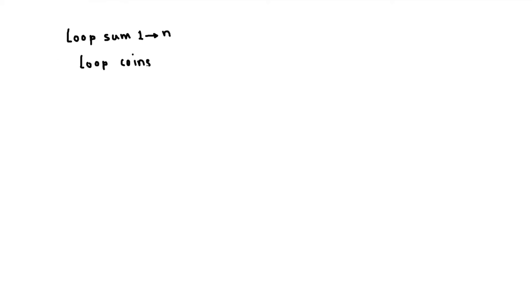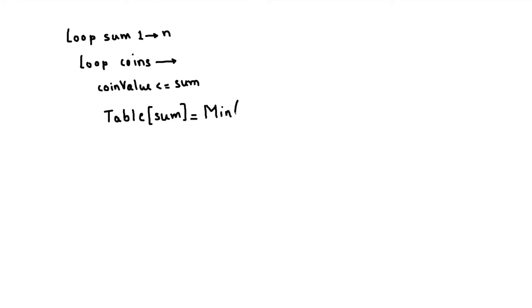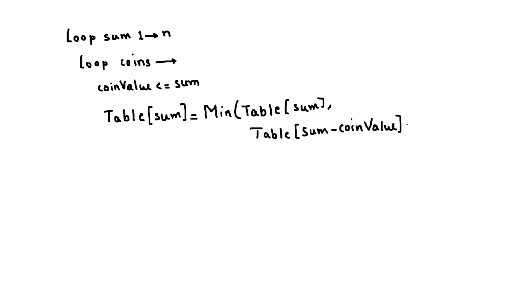Now let's look at the pseudocode. We loop through sums from 1 to n, and inside we have an inner loop through the available coins. We check that the coin value is less than or equal to the current sum. Then: table[sum] = minimum of table[sum] and table[sum - coin_value] + 1.